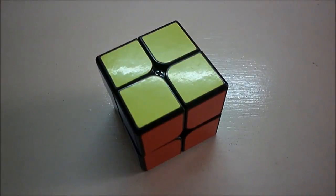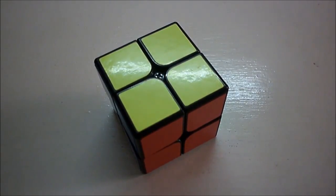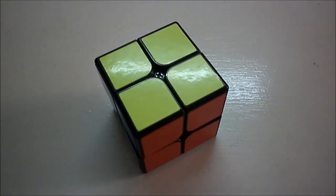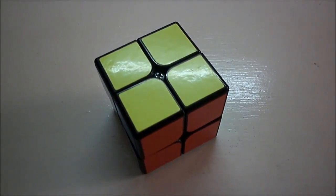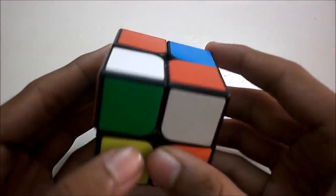So the Ortega method is an intermediate method for 2x2. Using this method I average about 4-5 seconds. So this method consists of 3 steps.